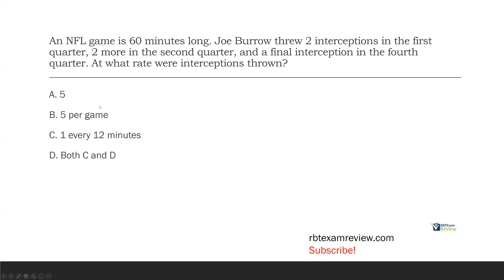A, five — is five the rate? No, five is just the frequency. Rate has a time component. If we said five per game, now we're talking, because a full game happened and Joe threw five: five per game. What about one every 12 minutes? If we have five interceptions in a 60-minute game, does that equal one every 12 minutes? It does. So rate could be five per game, or one every 12 minutes — both feature a frequency and a time component, and both accurately reflect how often an interception was thrown.